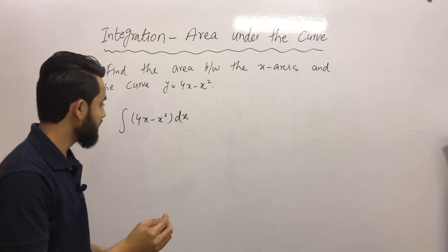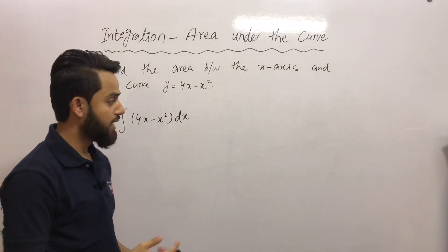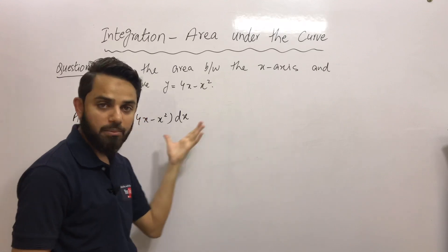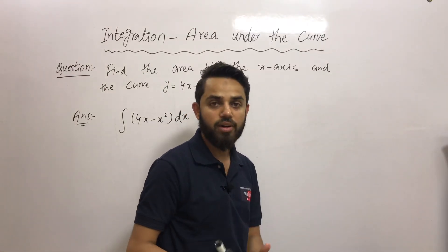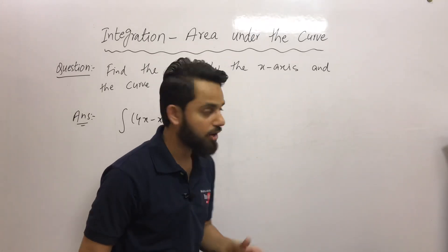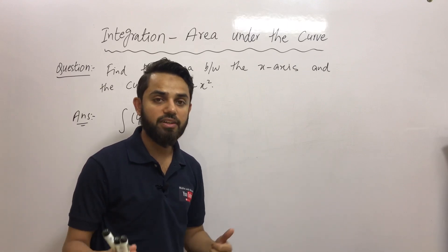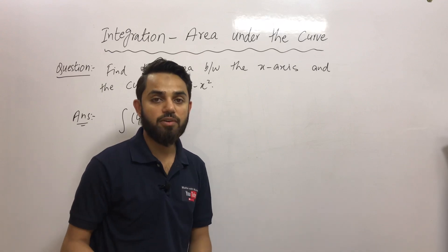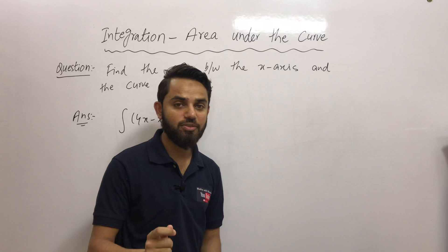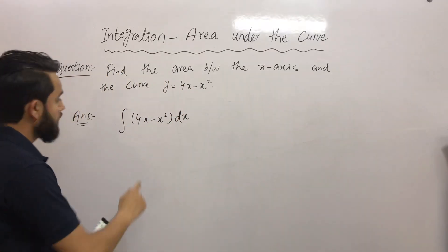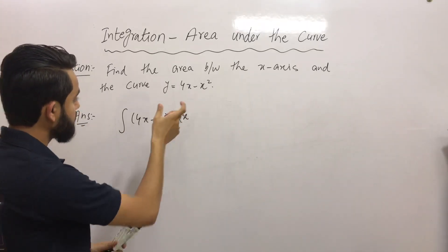The second thing is to construct a table for the given curve, and with the help of that table you construct the graph and shade the region you are looking for. That's how we calculate area under the curve. The first problem we have is that we do not have the limits of integration, so how are we going to calculate it? There is something hidden in the question that will help us find them.